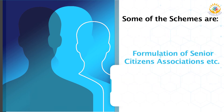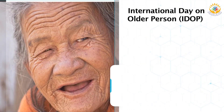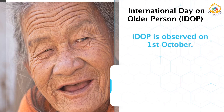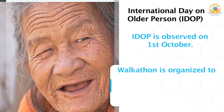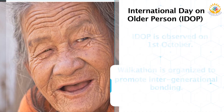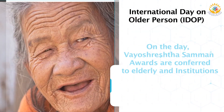Every year the Ministry of Social Justice and Empowerment observes the International Day of Older Persons on 1st October. A morning walkathon is organized at Rajpath, India Gate, to promote intergenerational bonding, with more than 3,000 senior citizens from across Delhi, NGOs working in the field of elderly issues, and school children participating. On this day, Vayoshreshtha Samman Awards under different categories are conferred to elderly individuals and institutions who have done outstanding work in elderly care, by the honorable President of India.